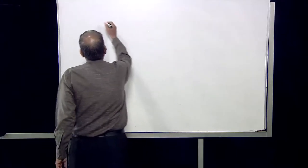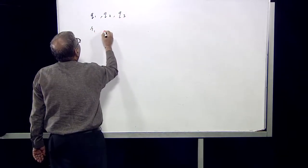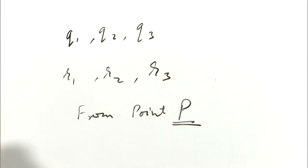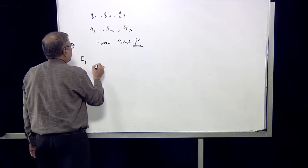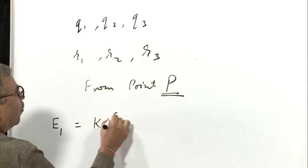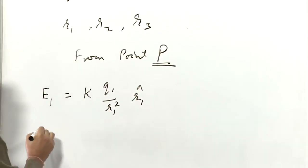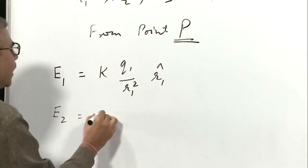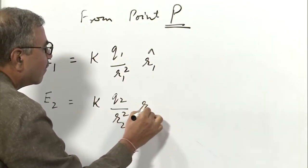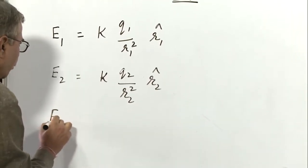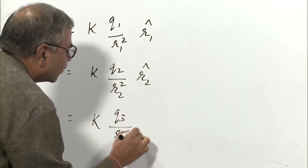If there are a number of charges Q1, Q2, Q3, they are at distances R1, R2, and R3 from point P. The expression for electric field due to charge Q1 is: E1 is equal to K Q1 upon R1 square, R1 cap. E2 is equal to K Q2 upon R2 square, R2 cap. E3 is equal to K Q3 upon R3 square, R3 cap.